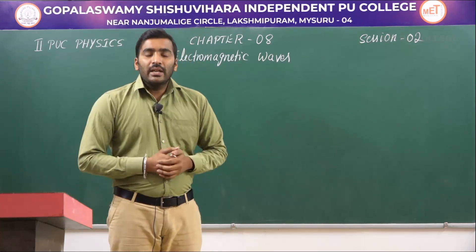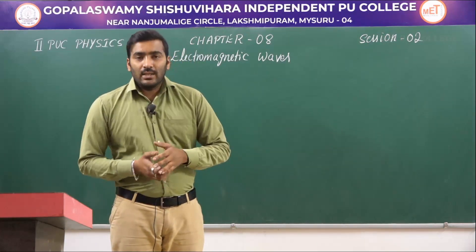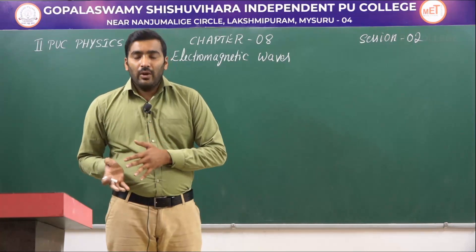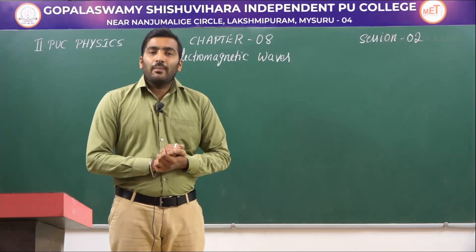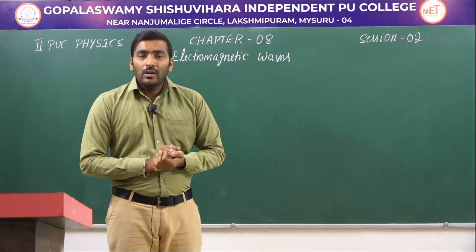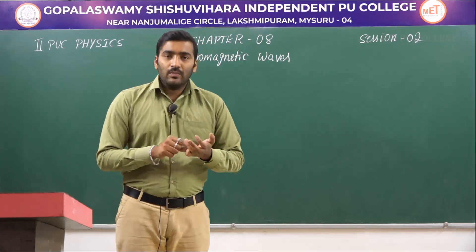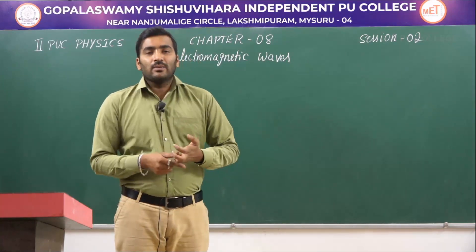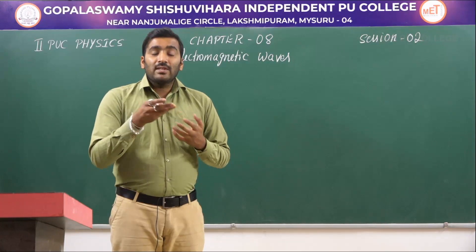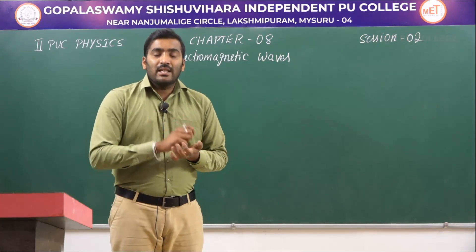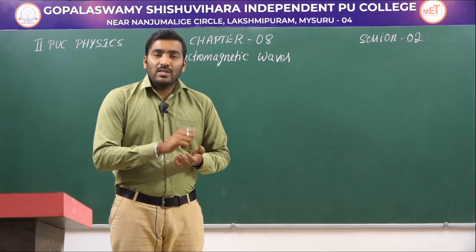We studied about what are the sources that produce electromagnetic waves. The sources that can produce an electromagnetic wave are an oscillating charge or an accelerated charge. We had given some examples for oscillating and accelerated charges in our previous session.